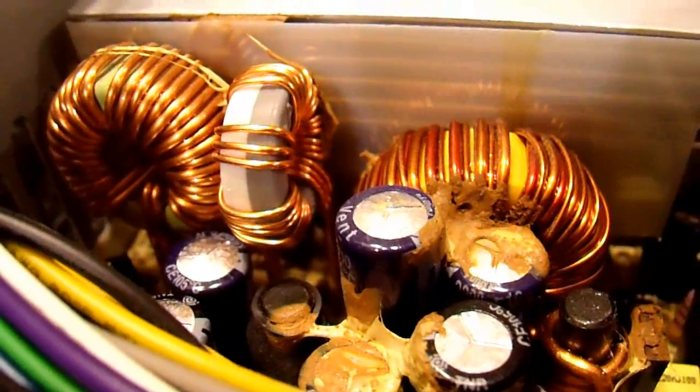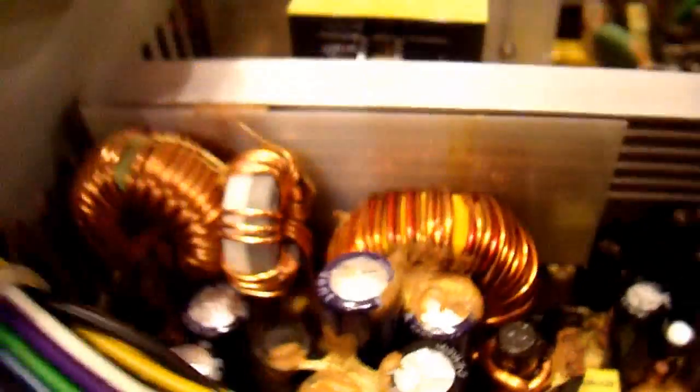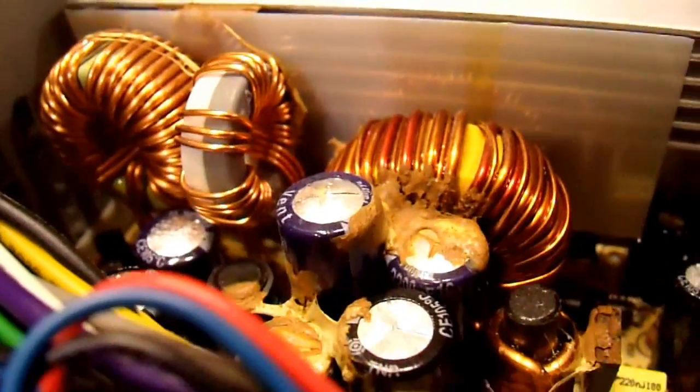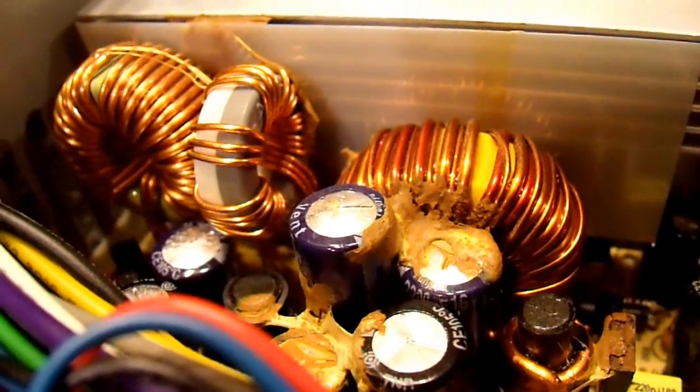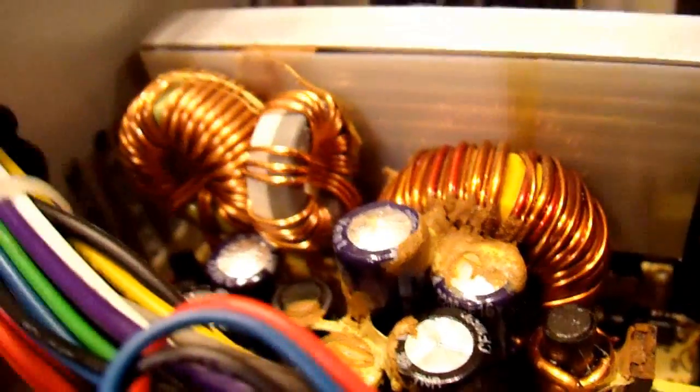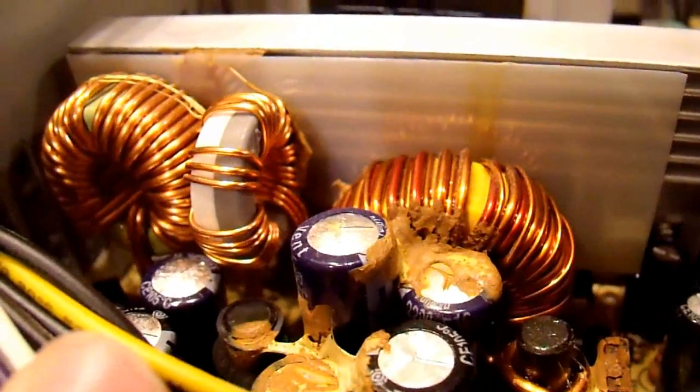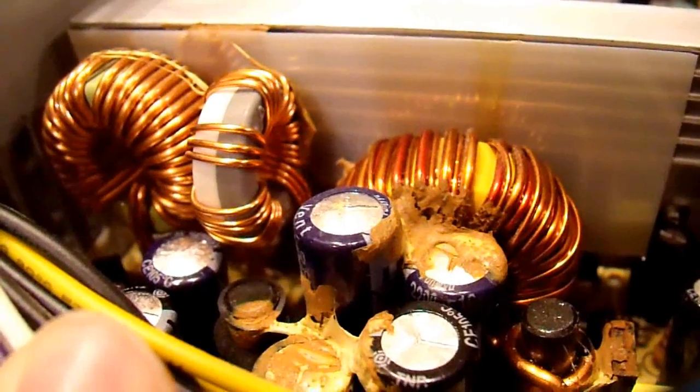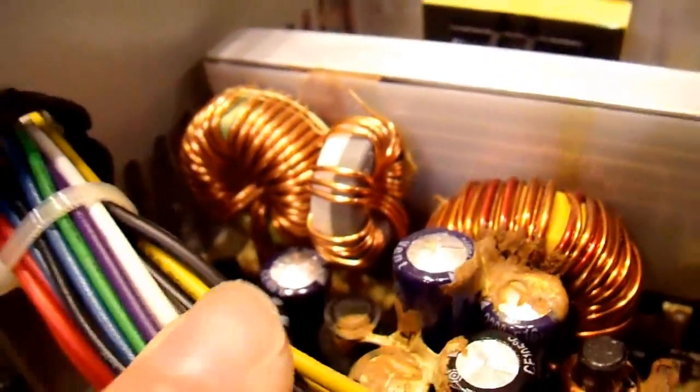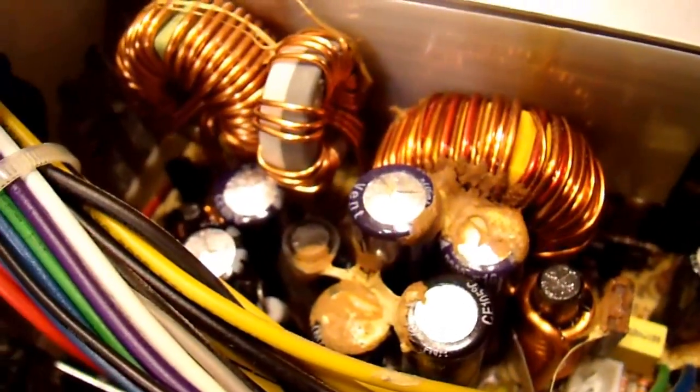It looks like it degraded over time. I'm sure it used to be white. But just material that holds these in place mechanically so that when you jostle this thing around in shipment or whatever, these components don't wobble around and eventually break off. So that's not a concern, but the top of these capacitors is obviously bulged, and it looks like a couple of them are leaking a little bit. So, there's my failure.